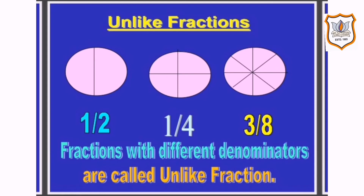Unlike fractions are those that are dissimilar. For example, one by two, one by four, and three by eight are given. Here the denominators are different. So fractions with different denominators are called unlike fractions.